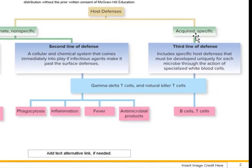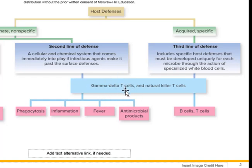The acquired specific defenses are the focus of Chapter 15. These are specific host defenses that must be developed uniquely for each microbe through the action of specialized white blood cells — lymphocytes. The B cells and T cells are primarily involved in the third line of defense. Some T cell subsets, like natural killer T and gamma delta T cells, serve as a bridge between the second and third lines of defense.